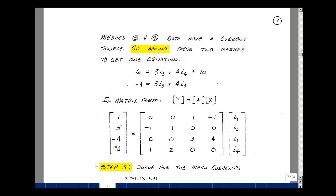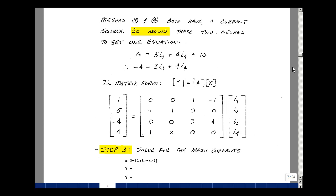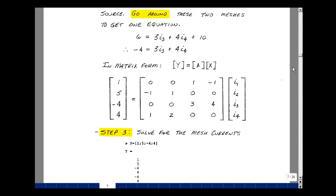This equation over here is minus 4 is equal to 3I3 plus 4I4. On the previous page, we had 4 was equal to 1 times I1 plus 2 times I2. Since you have a 4 by 4 matrix, let's use MATLAB to find the answer.